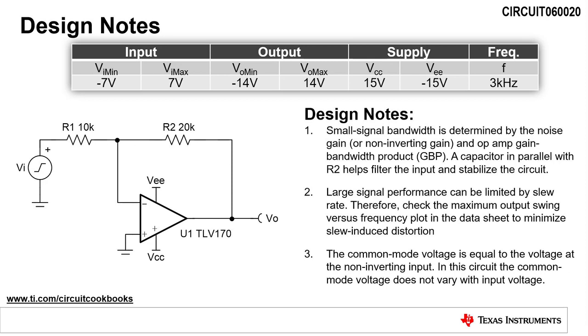When designing an inverting amplifier circuit, there are a few design notes to be aware of. First, the small signal bandwidth is determined by the noise gain, or non-inverting gain, and op amp gain bandwidth product. Placing a capacitor in parallel with R2 can help filter the input signal and stabilize the circuit.